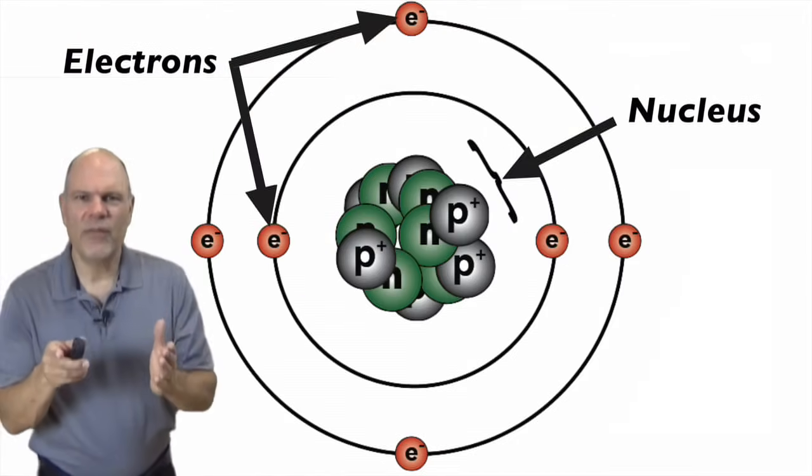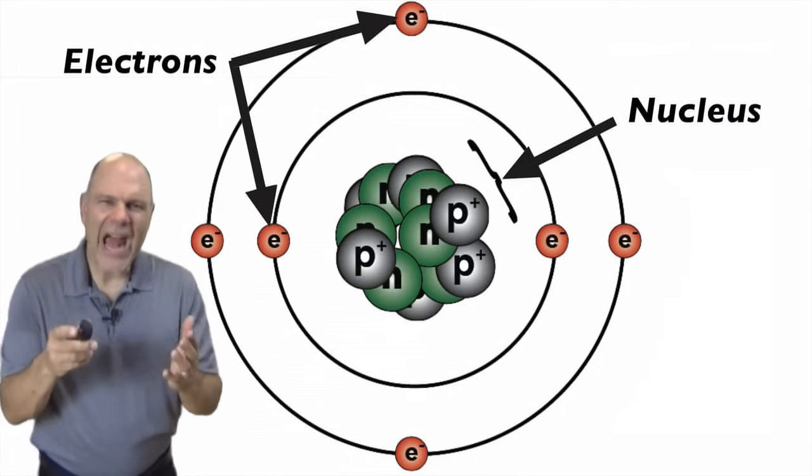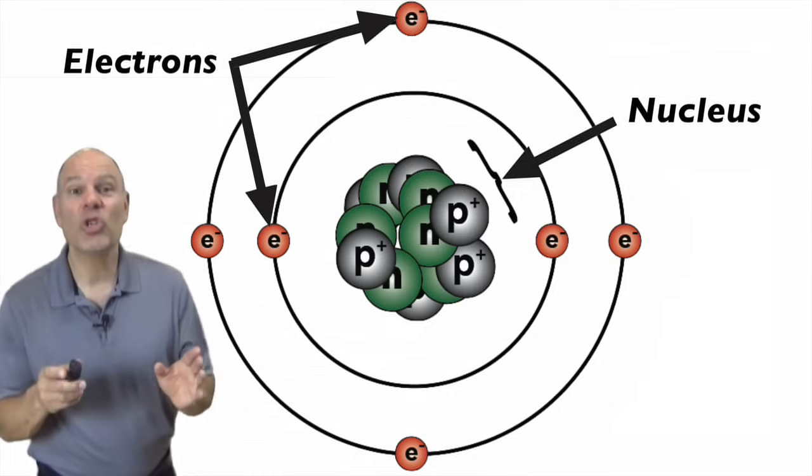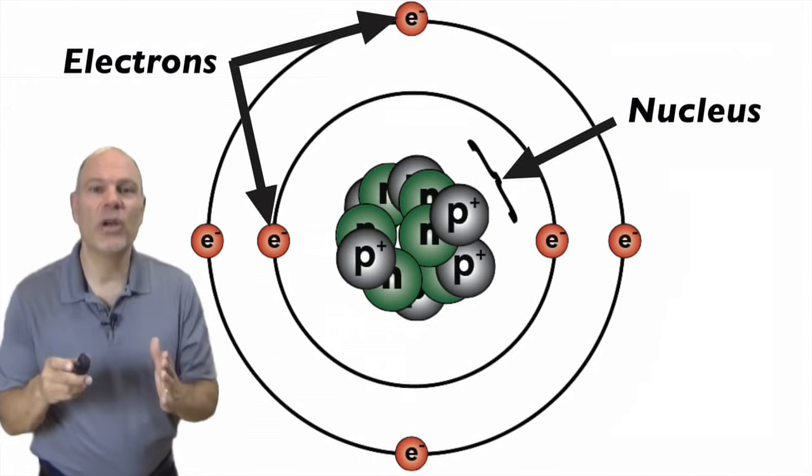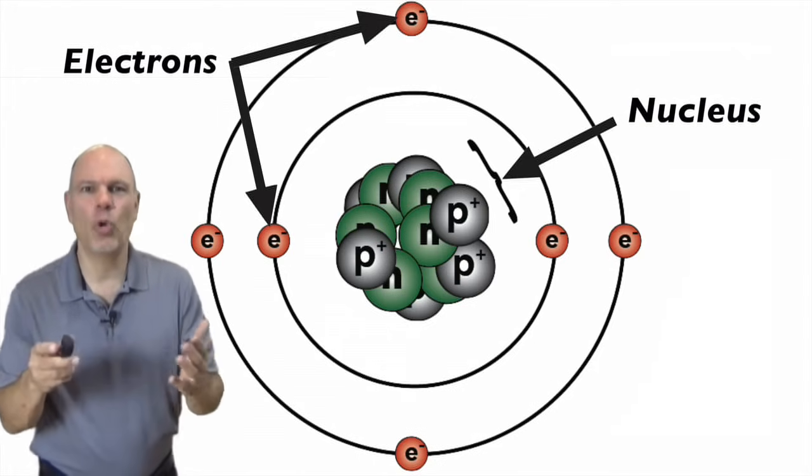In this representation of a carbon atom, the atom itself is shown as a kind of miniature solar system. The nucleus is about where the sun would be, and the electrons are shown kind of like planets orbiting outside.